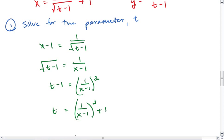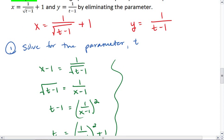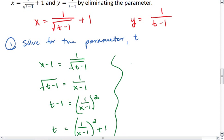Now let's look for the y. We go back up here. We get y equals 1 over t minus 1. So t minus 1 equals 1 over y. t equals 1 over y plus 1.